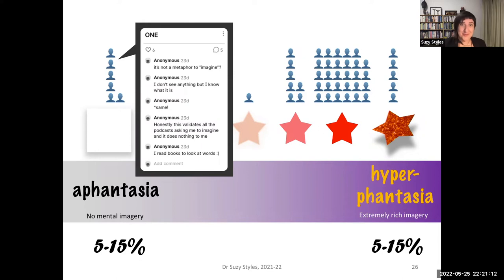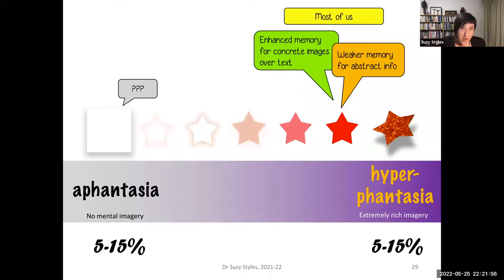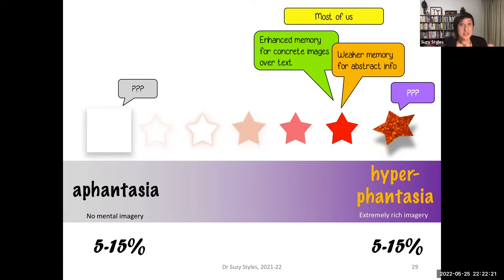You might be wondering what this has to do with teaching. For most of us, we have enhanced memory for concrete images over information in text form, and weaker memory when learning relationships between abstract information that cannot be visually represented. What we don't know is how memory can be structured for people who do not have visual representation — and we also don't know much about those with hyperphantasia. There may be benefits or deficits to either form of mental imagery that we just don't know, because the previous literature has focused on the typical student only.